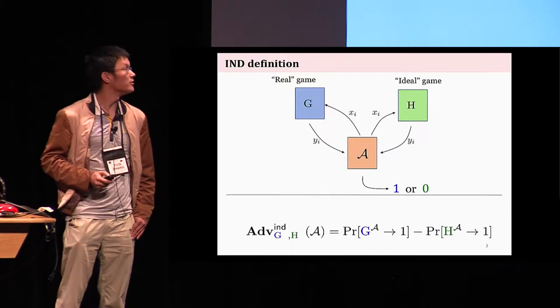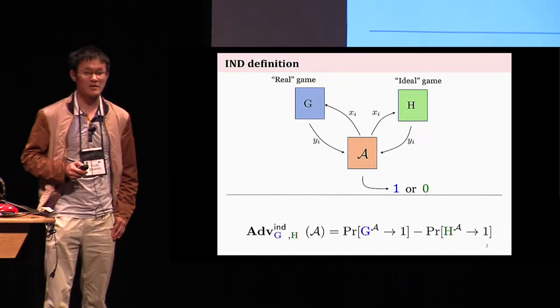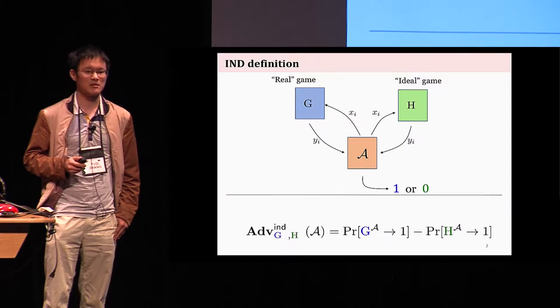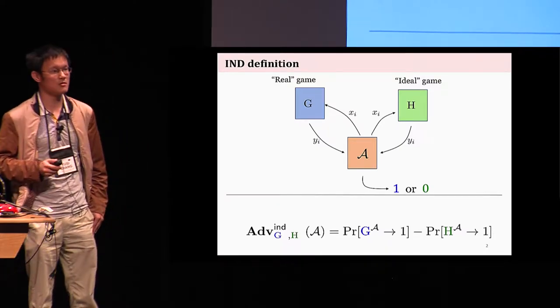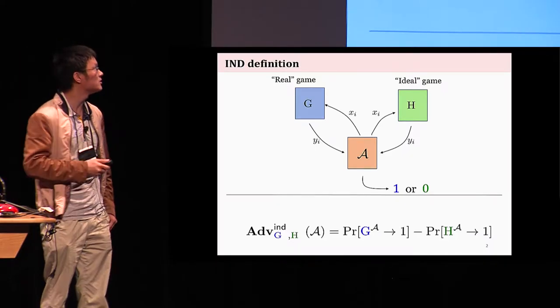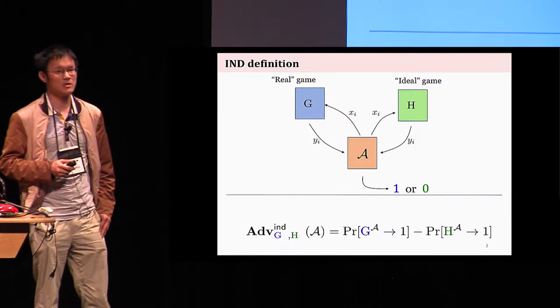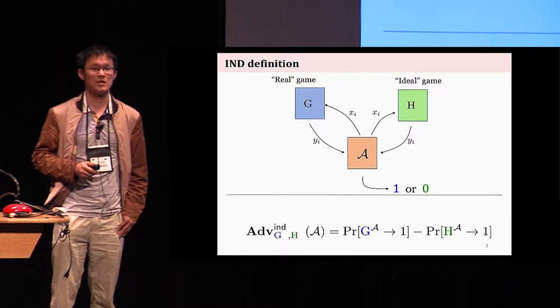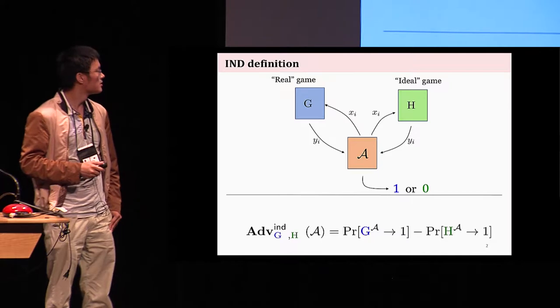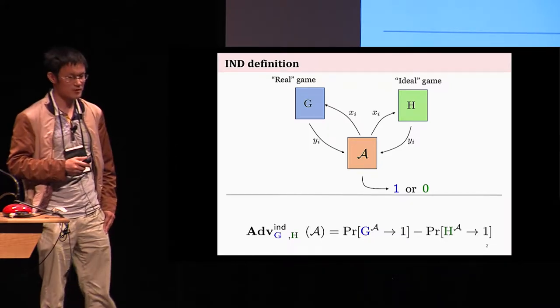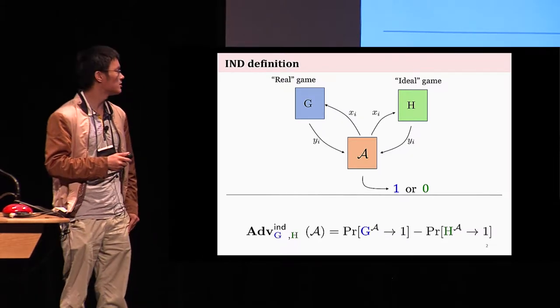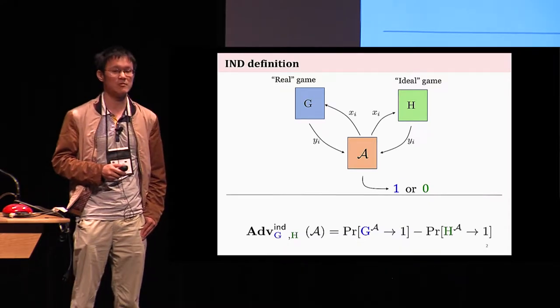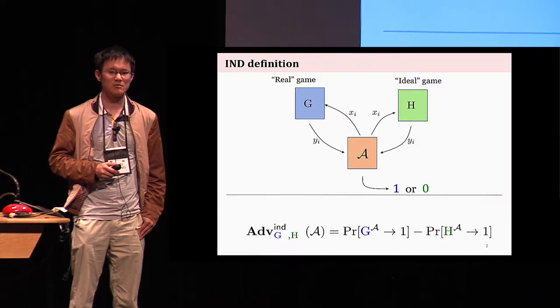So let's first start with a review about indistinguishability, IND for short. As we are all familiar with, indistinguishability is about an adversary advantage notion that measures how good he is in distinguishing a real game G from an ideal game H. In this setting, an adversary A would ask questions to one of the two games and receive responses. His job is to differentiate which game he is interacting with. So this concludes somehow, okay.